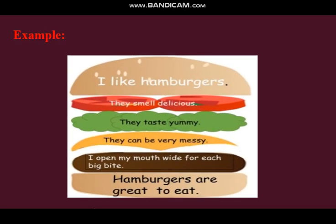Here we have an example about hamburgers: I like hamburgers. They smell delicious. They taste yummy. They can be very messy. I open my mouth wide for each big bite. Hamburgers are great to eat. In this, we have used sensory details to describe the hamburgers.